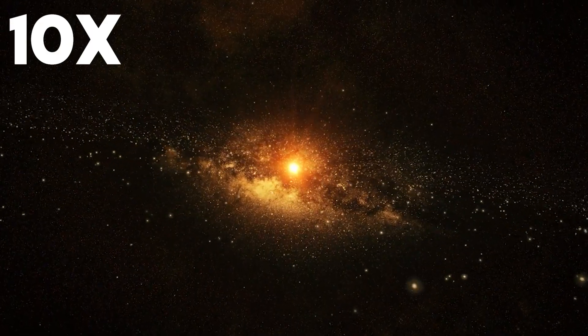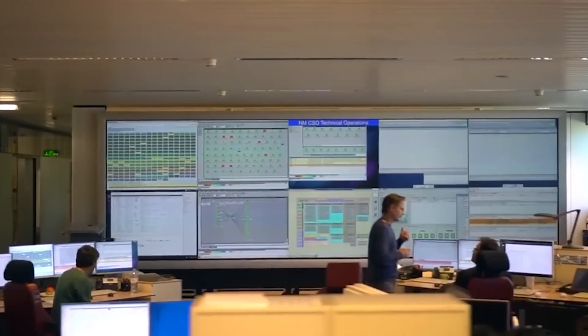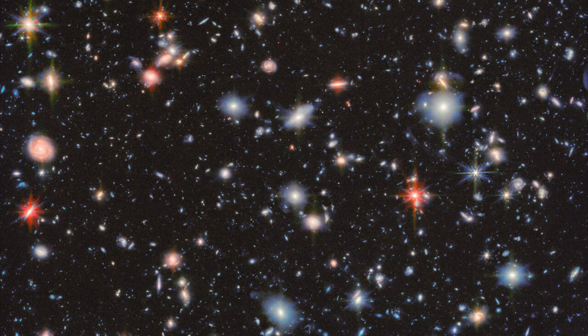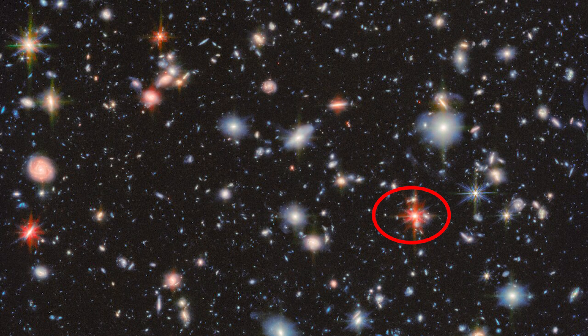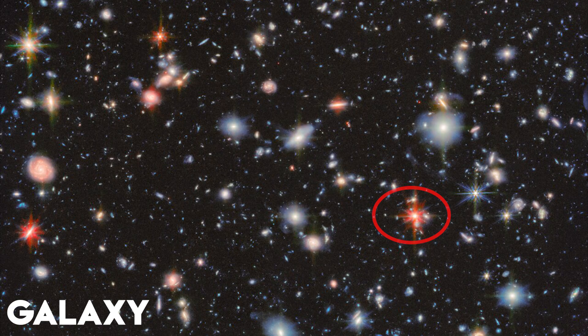To make sense of this, let us examine a deep field image captured by Webb's MIRI instrument. This panoramic view of the cosmos displays brilliant spiral galaxies in the foreground and a staggering collection of much older galaxies in the distance. Practically everything visible here is a galaxy.